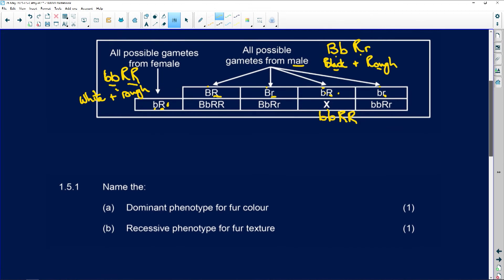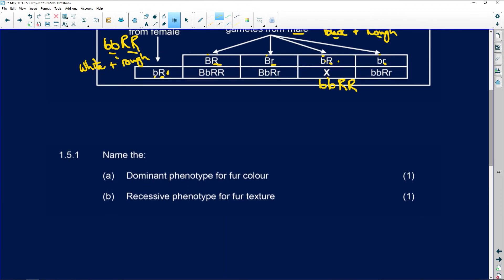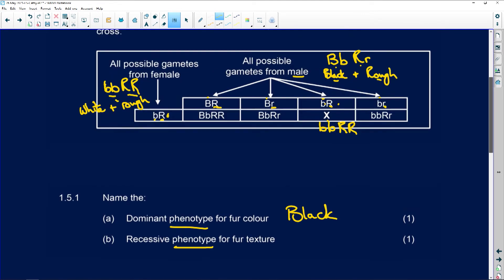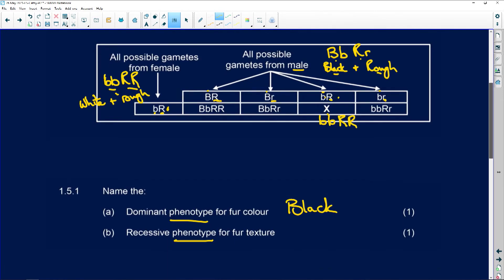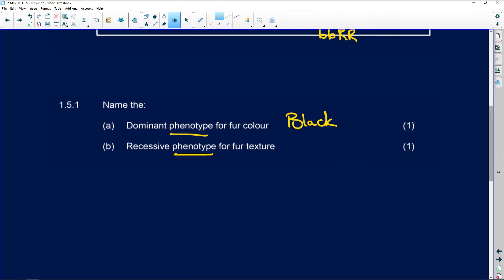Let's check our questions. It says name the dominant phenotype for fur color. So the dominant phenotype we know is black. And then the recessive phenotype for fur texture was smooth. For smooth texture is the lowercase, so that would be smooth.